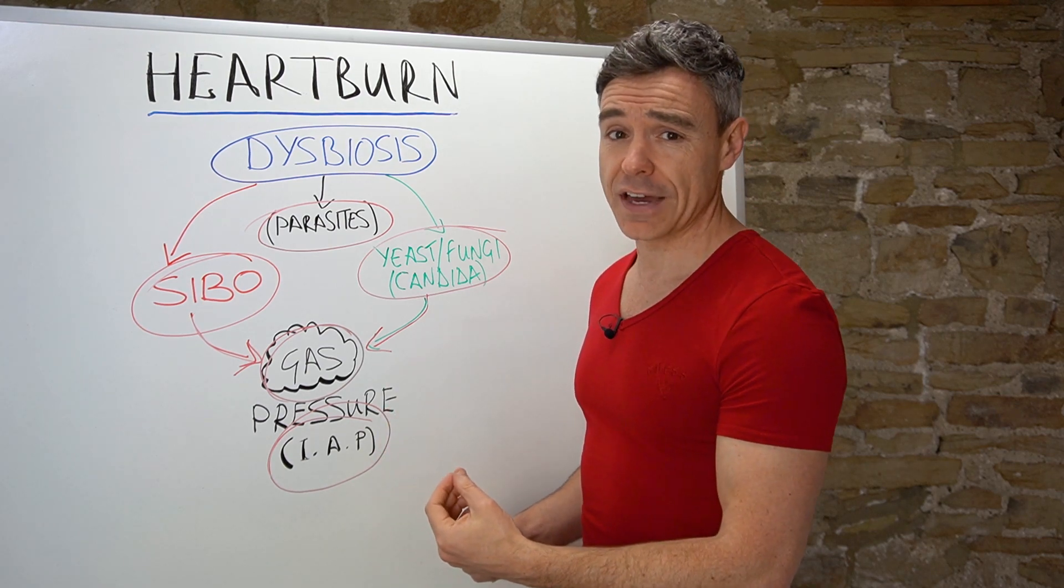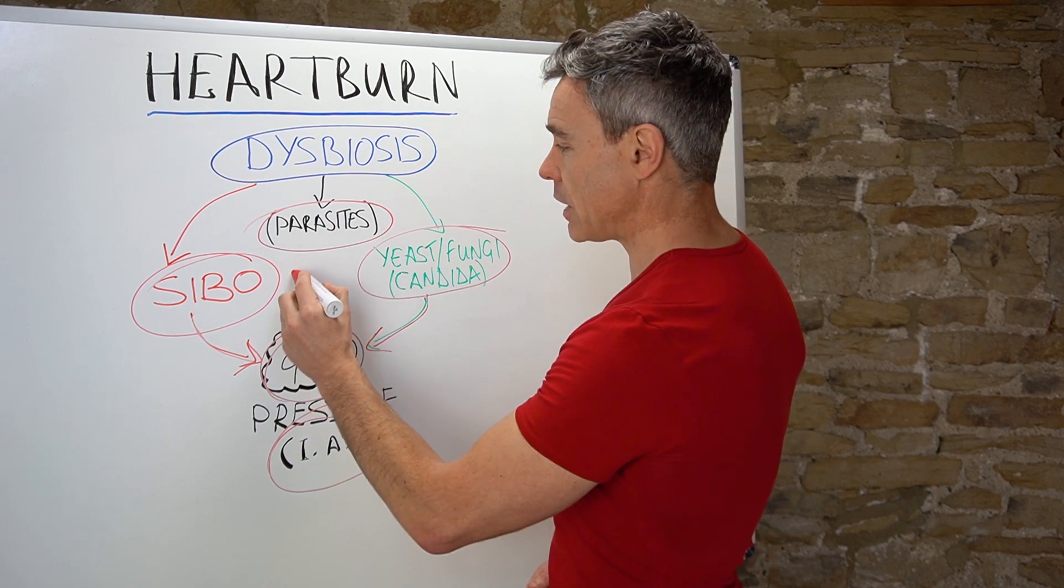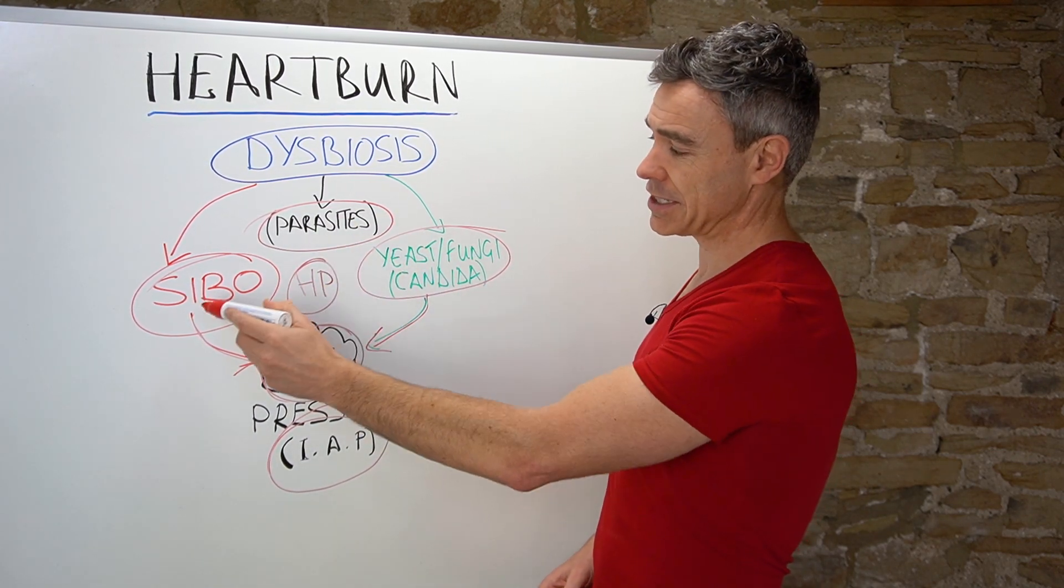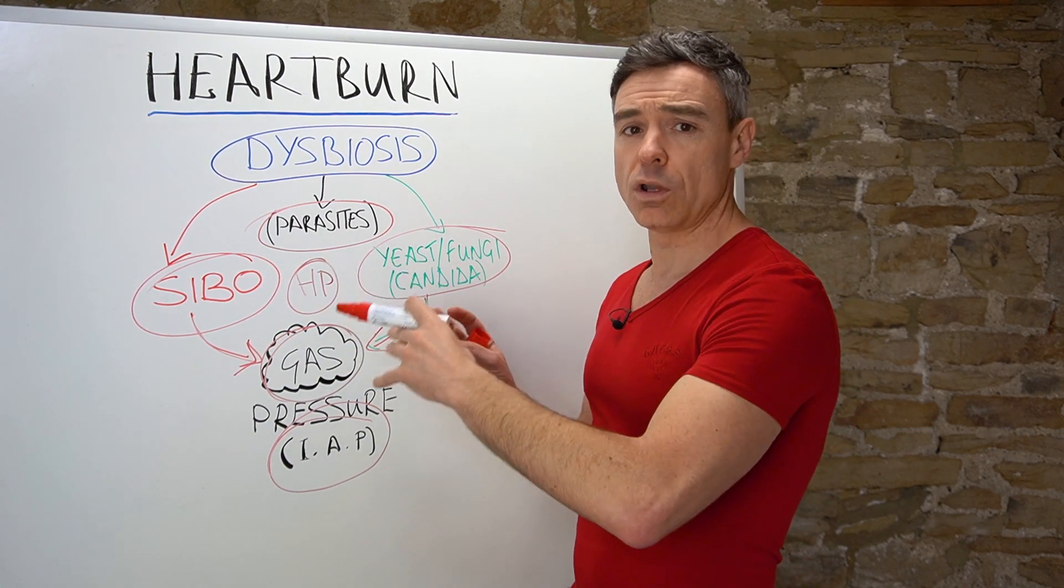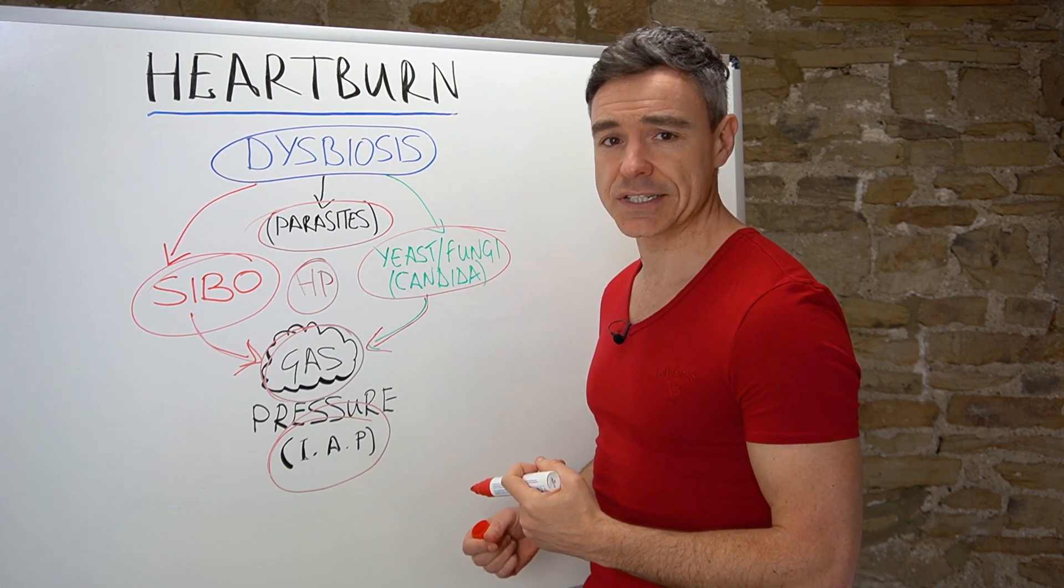So you could literally add H. pylori into the middle of this mix here and say that you've got parasites, SIBO, yeast and fungal overgrowth, and H. pylori—any or all of them in combination could be contributing to the problem. So it's really important to get properly tested.